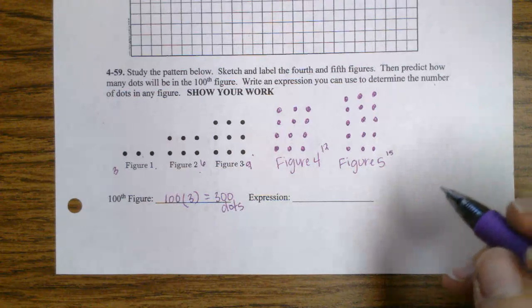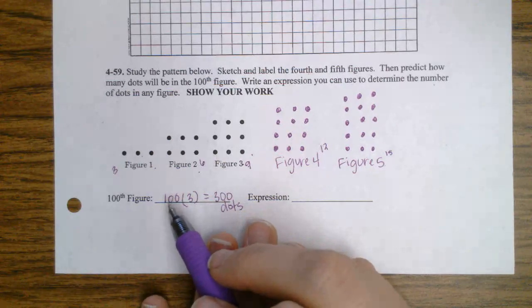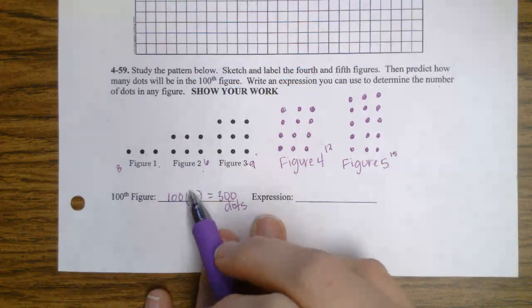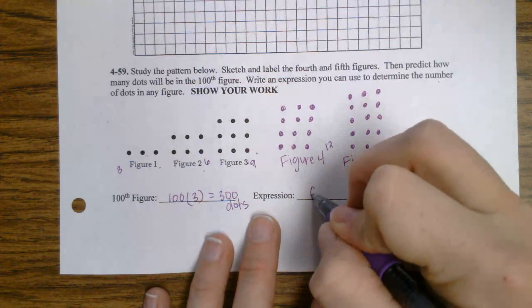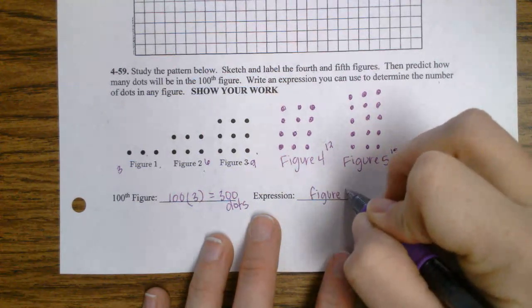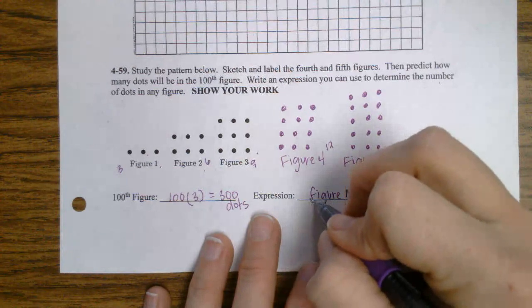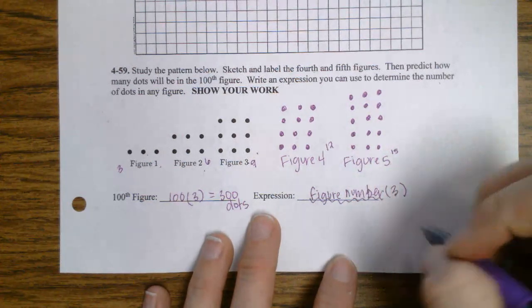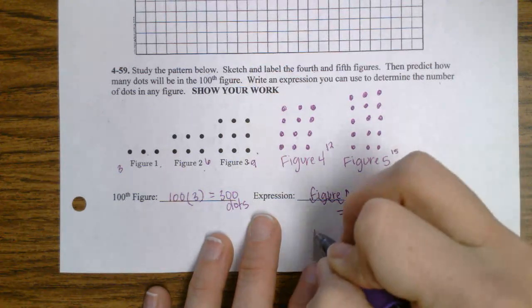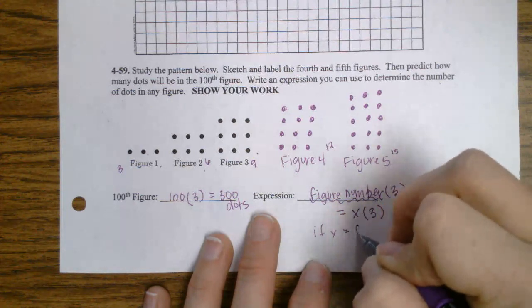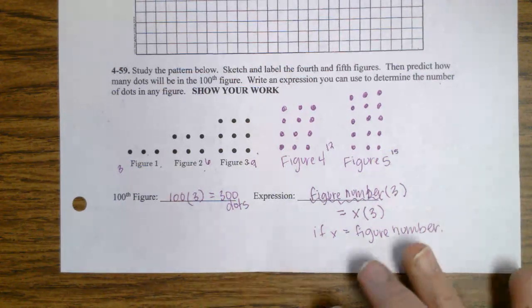Now my expression, what if I don't know my figure number? This 100 is my figure number. The 3 is what it's growing by. But what if I wanted it to figure out for any figure number? So it is, we figured out it's my figure number times 3, but I need to use something in place of this because I don't want to write figure number each time. Well, it's x times 3, if x is the figure number.